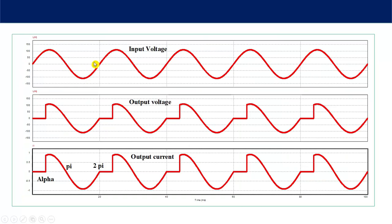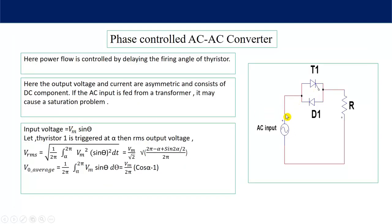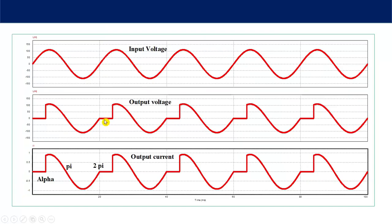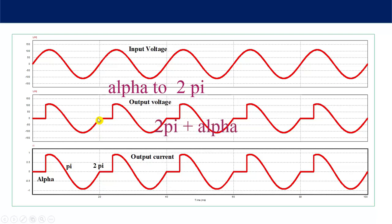Here we can see the input voltage. At angle alpha, thyristor 1 is triggered, so the output voltage will follow the input voltage. As it is a parallel connection, once the thyristor is on the output voltage will be equal to the AC input voltage. So from alpha to pi — as the load is resistive — thyristor 1 will conduct. From pi to 2π, the diode will conduct. Then at pi plus alpha, the thyristor is triggered again and the same cycle is repeated.